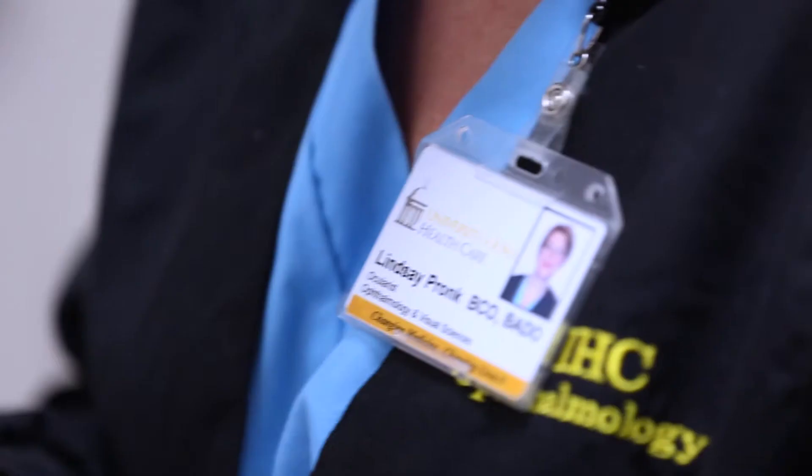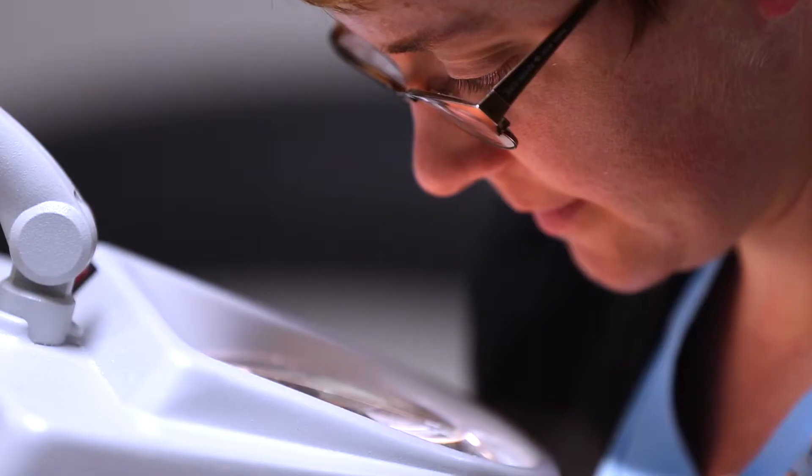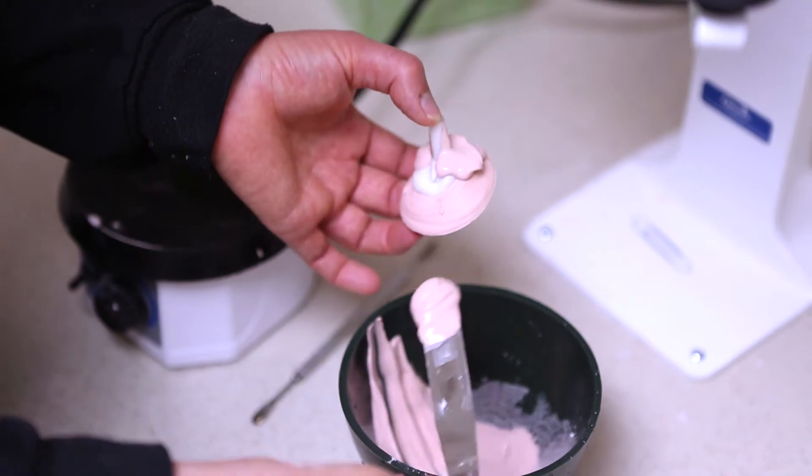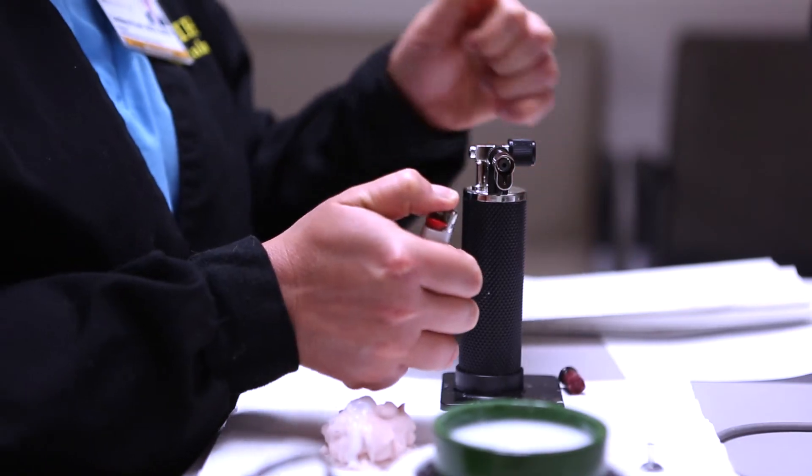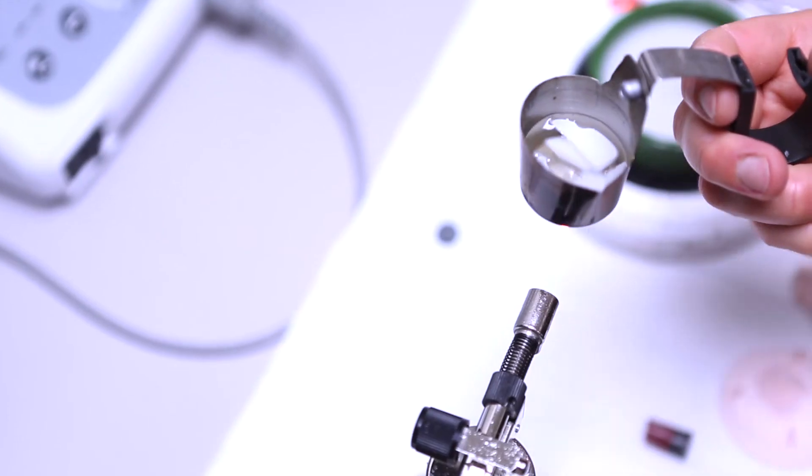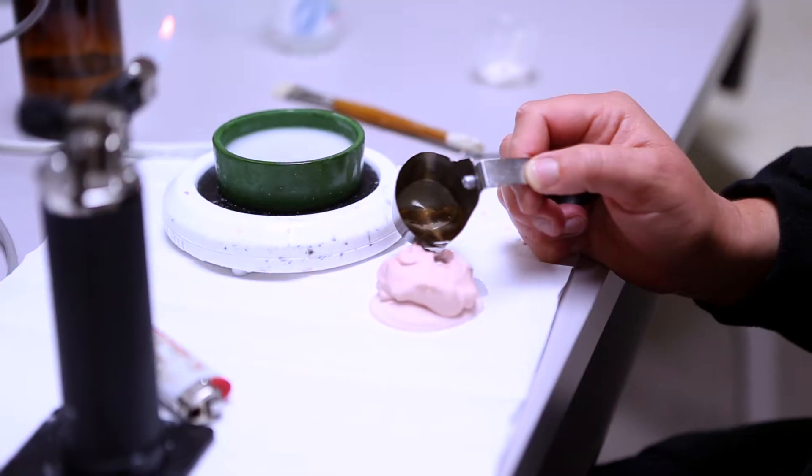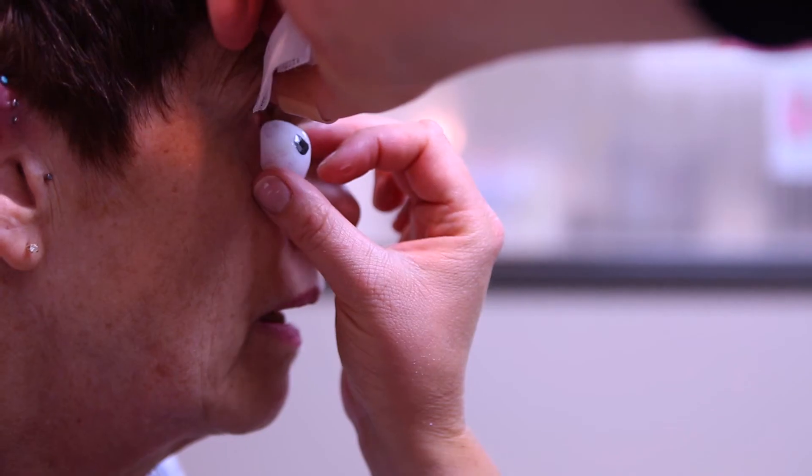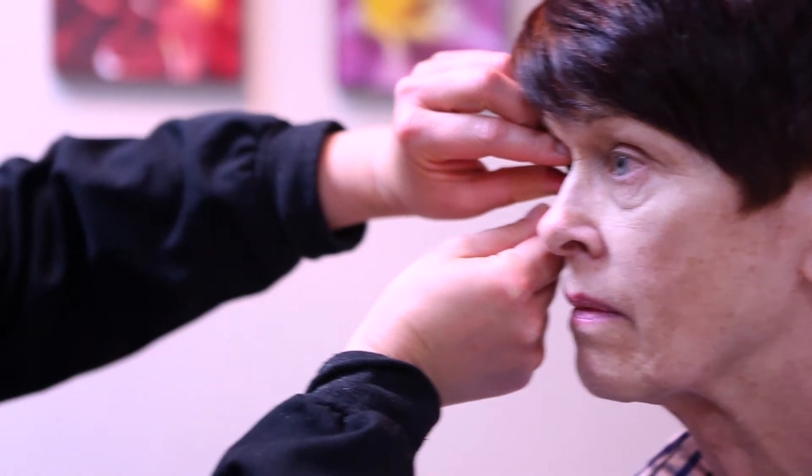It takes two days to make a prosthetic eye, so I begin my process by taking an impression of the eye socket, and what that impression shows me is the shape and the contour of the inside of the socket. I spend a lot of time ensuring that the eye is fitting so that it doesn't cause any trouble or irritation.